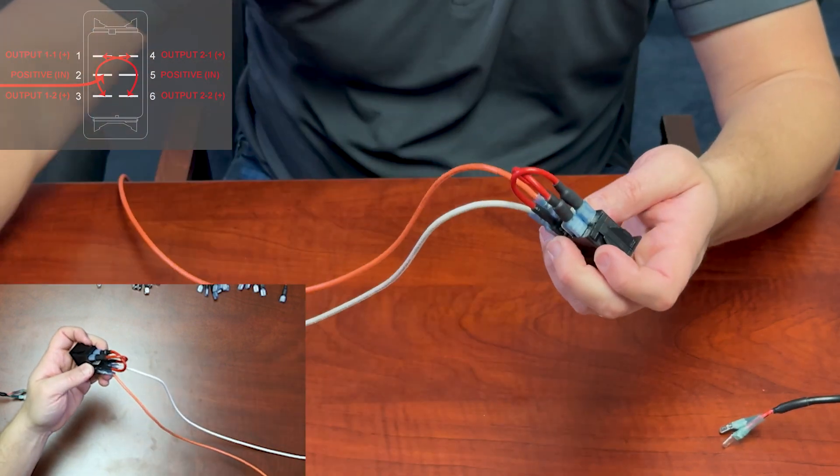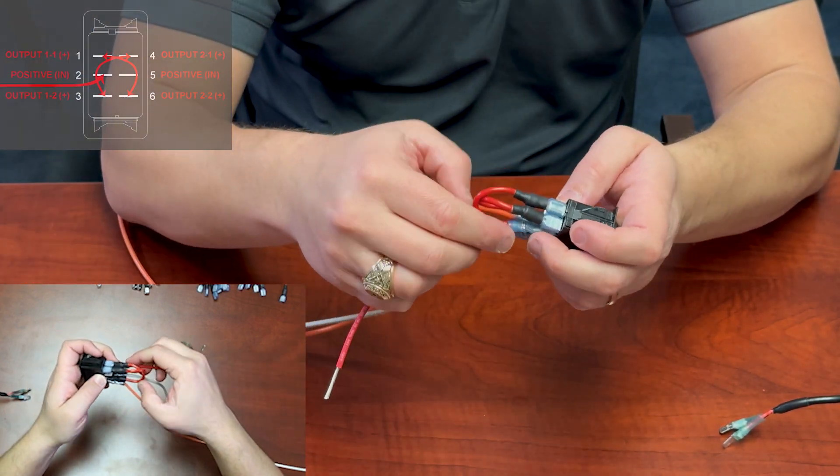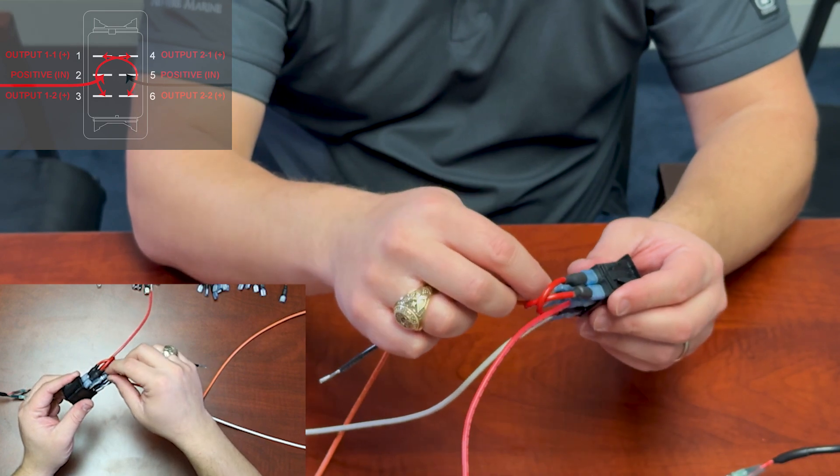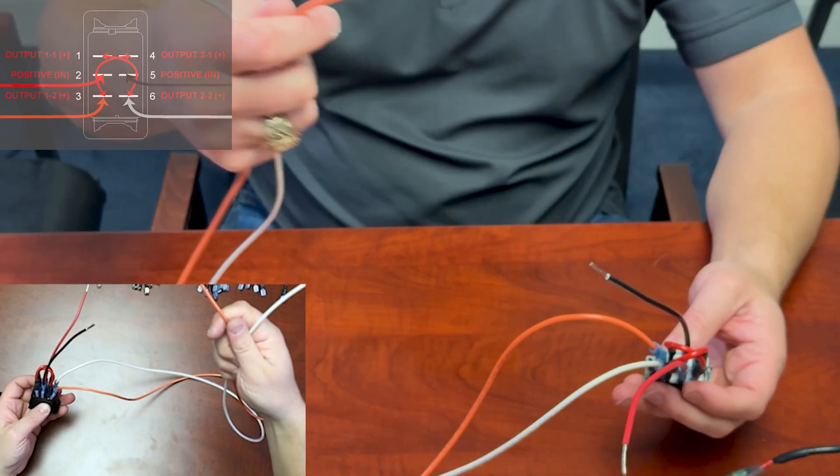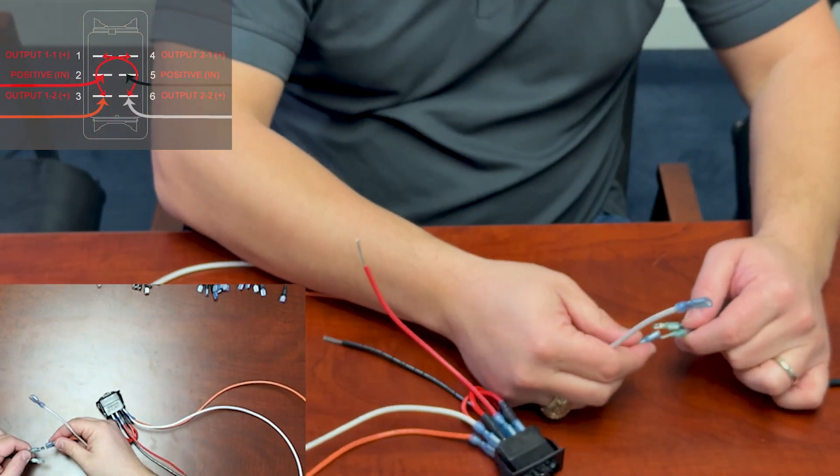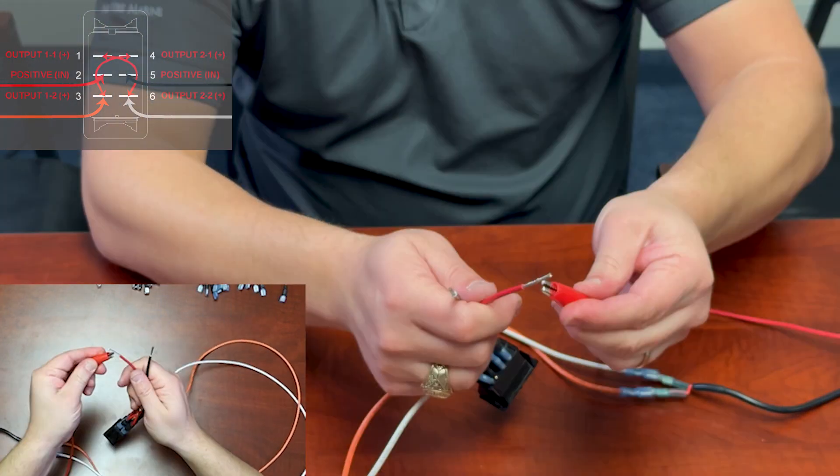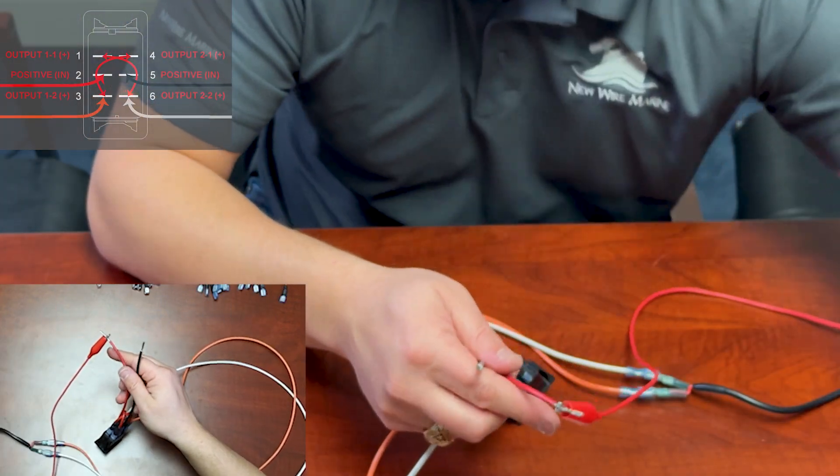Now we need to bring power into the switch, positive into one side, and then negative into terminal two here, or it could have been five. Positive and negative on these don't really matter. Now these are the output leads. They go here and power comes in positive into one side, negative into the other side.